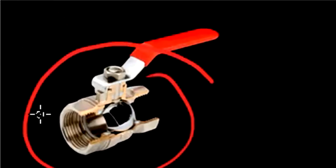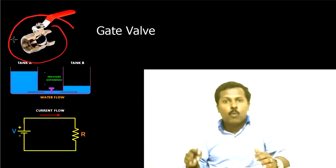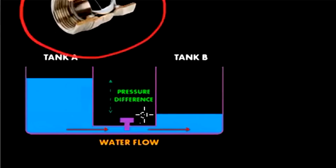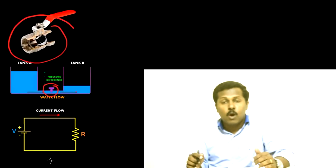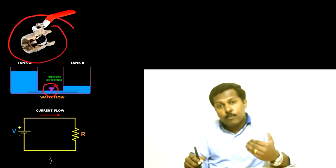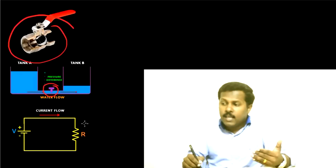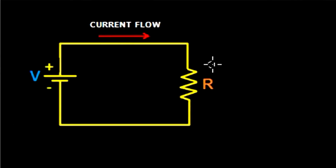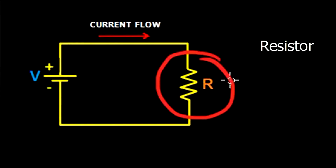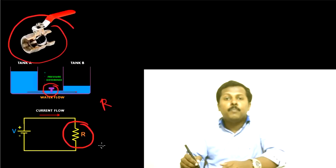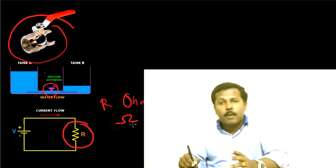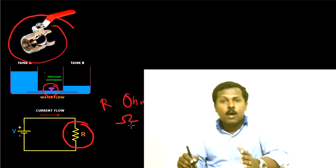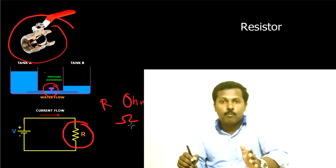Now consider a situation in which we need to purposefully control the flow of water. In that case we use something like a gate valve — you may have seen this kind of gate valve in water pipe transfer systems. I have represented a gate valve using a T symbol here. A similar situation arises in electronic circuits where we need to control the flow of current, and in that case we use a device called a resistor. The symbol of a resistor is shown here; the letter R is used to denote it and its unit is Ohm, denoted by the symbol Ω. When we connect a resistor in a circuit, it opposes the flow of electrons — that is why it is called a resistor, because it resists the flow of current.